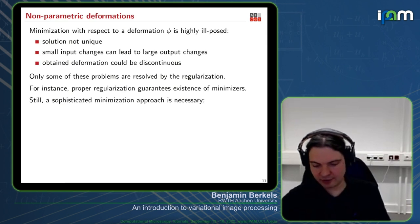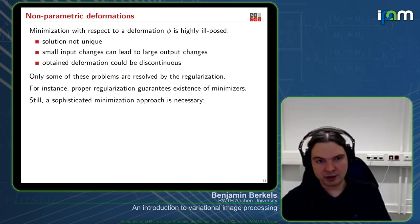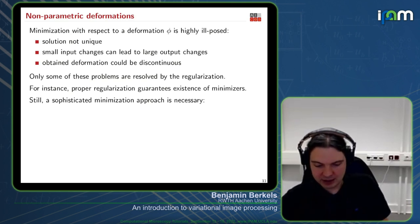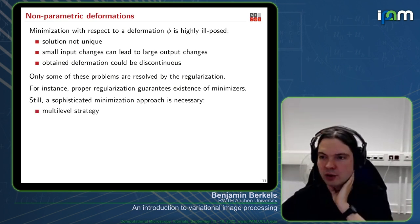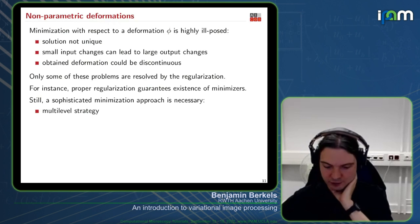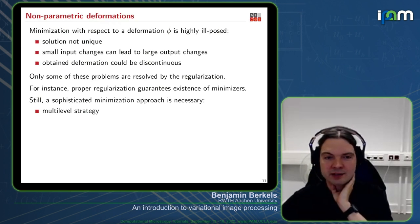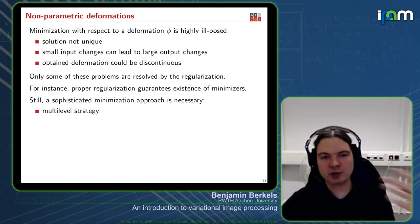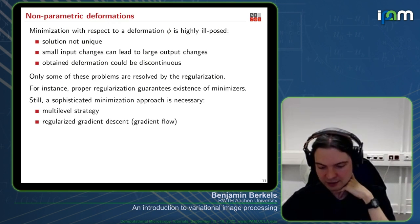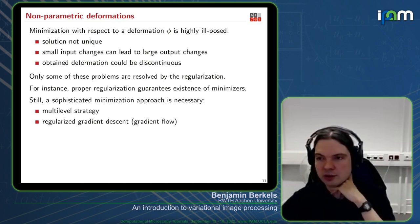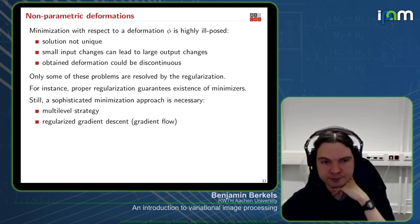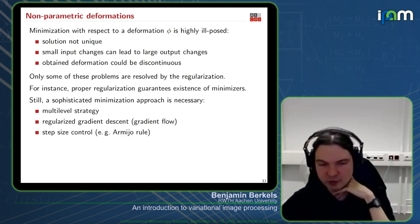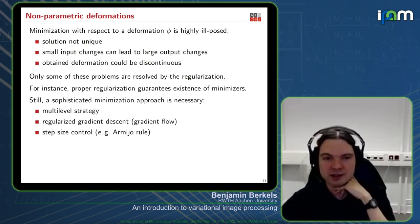You still need a sophisticated minimization approach for this non-convex optimization problem. One key strategy used in nearly all registration approaches is a multi-level strategy: you go from coarser to finer resolutions. For every resolution level, you need something for the actual optimization — for instance, regularized gradient flows. If you do this with an explicit gradient descent, you also may need some kind of step size control.